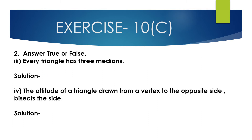Third bit: every triangle has 3 medians. This is true. Fourth bit: the altitude of a triangle drawn from the vertex to the opposite side bisects the side. This is false — the altitude does not bisect the side.